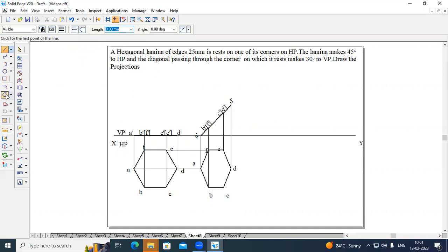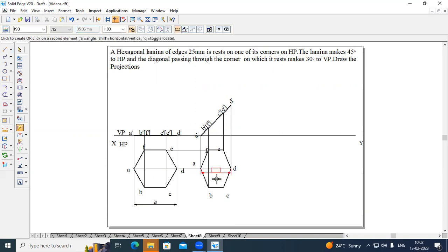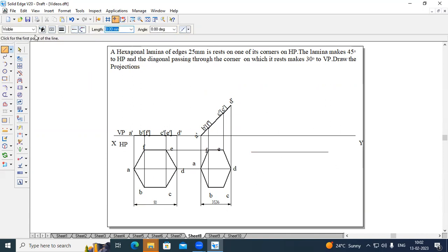Now we need to create a diagonal from A to D and from this point A to D and measure this diagonal. If we measure the diagonal here it is 50 and here we are going to get this as 35.36 because when the diagonal is passing through the corner on which it rests, it makes an angle of 30 degree with respect to VP.